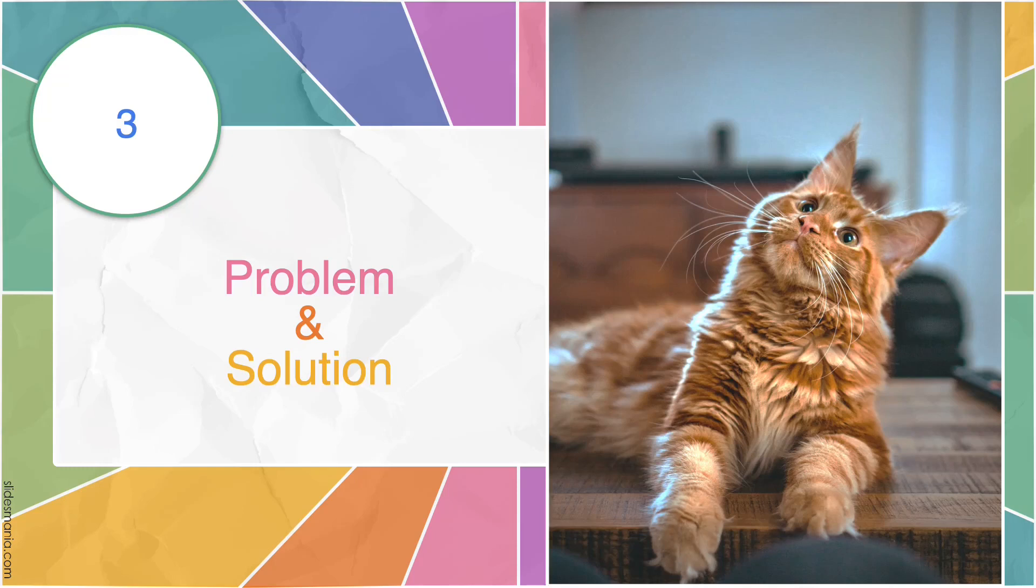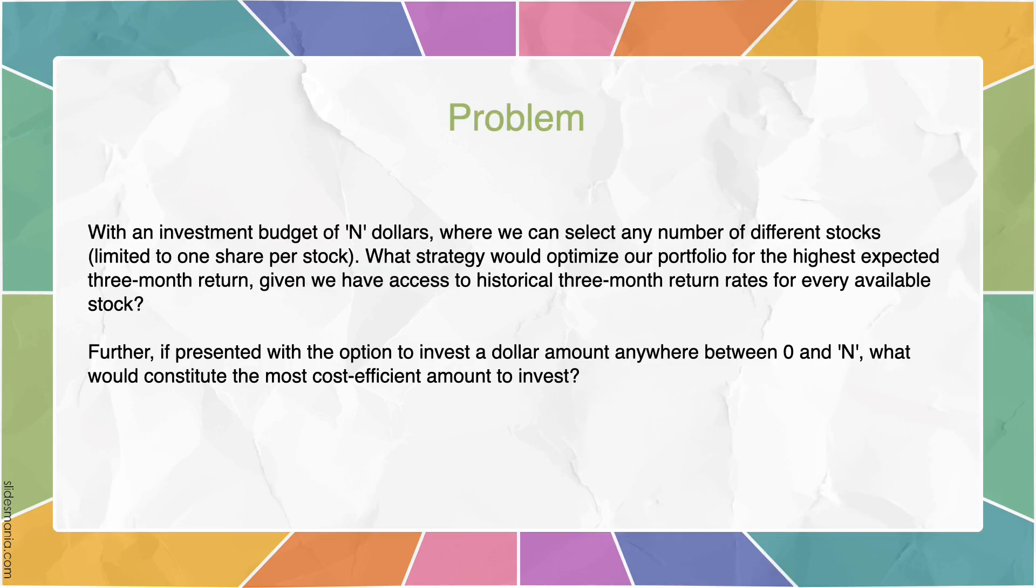Hi, I'm Chao Yi and I'm going to continue with the problem and solution part. Here is our problem. With an investment budget of N dollars, where we can select any number of different stocks, limited to one share per stock, what strategy would optimize our portfolio for the highest expected three months return, given we have access to historical three months return rates for every available stock? Further, if presented with the option to invest a dollar amount anywhere between zero and N, what would constitute the most cost-efficient amount to invest?